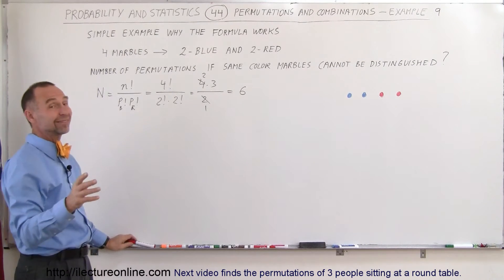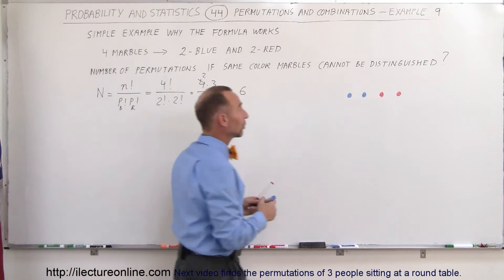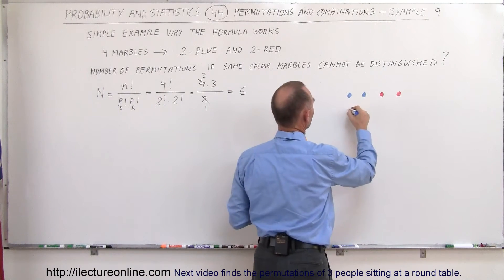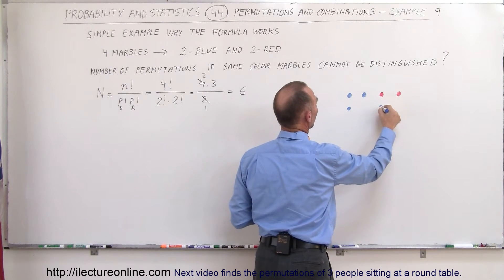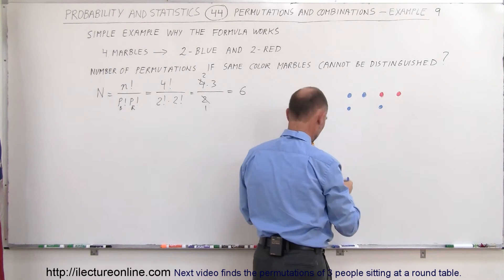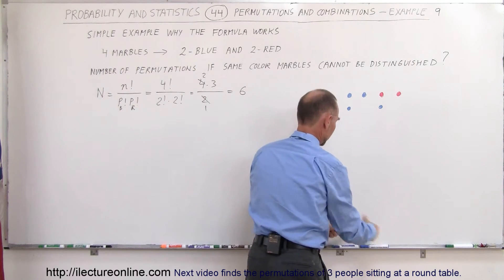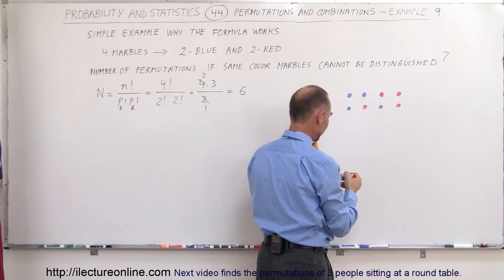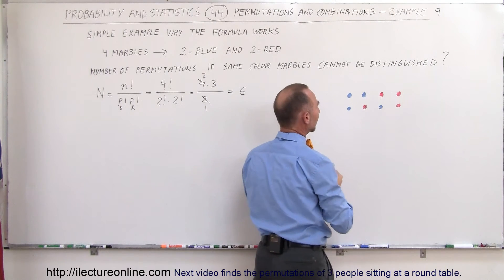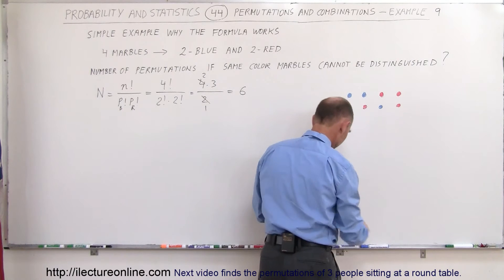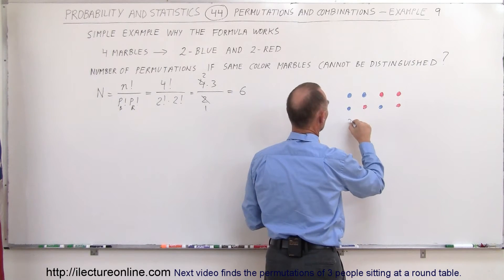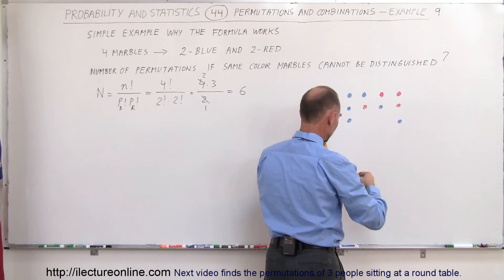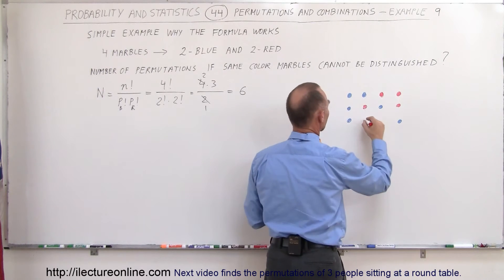We should get six of them. First, we're going to move this blue over there — so a blue goes over there — which means we have a red over here and a red over there. Then we can take this blue, move it over there, so we have a blue move over there and that means the two reds will be over here.